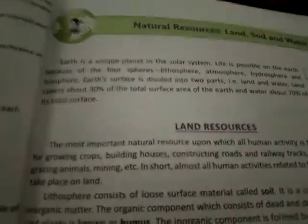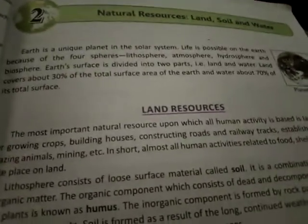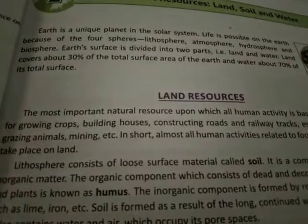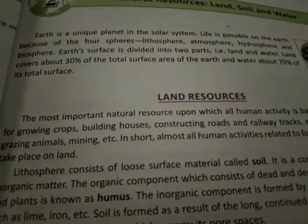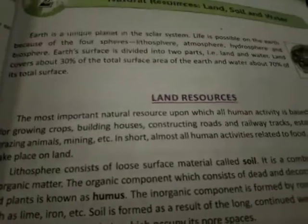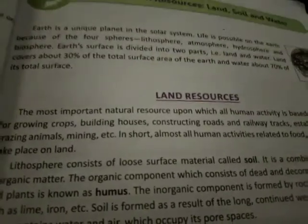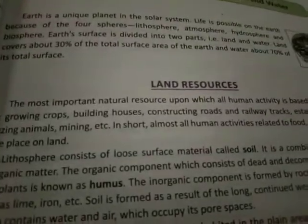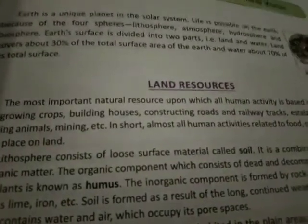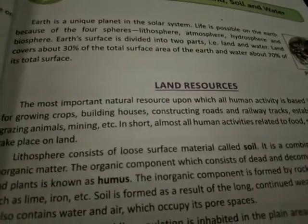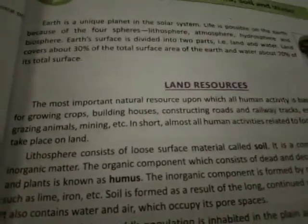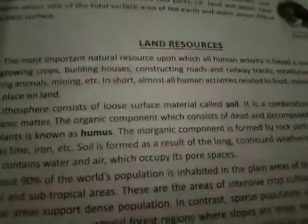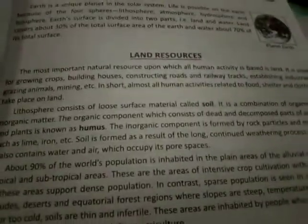Earth's surface is divided into two parts: land and water. Land covers about 30% of the total surface area of the Earth, and water covers about 70%. So our Earth's surface is divided into land and water — 30% land and 70% water, so the majority is water.